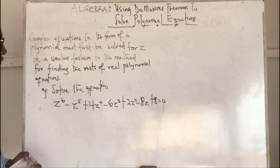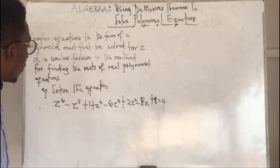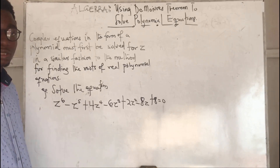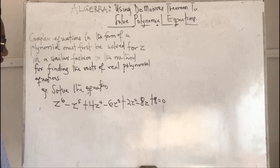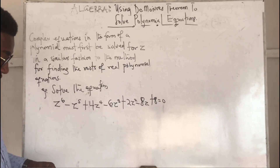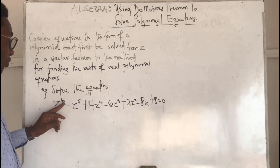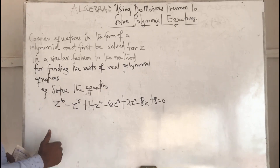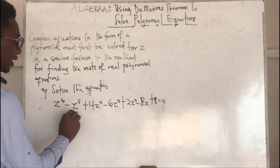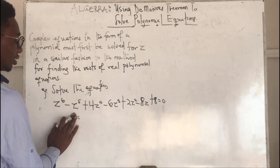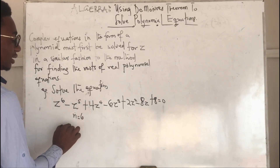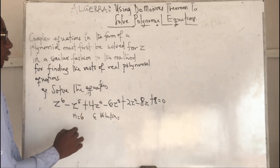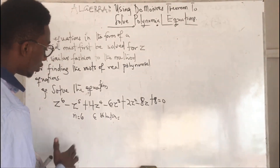This is the equation, and the highest degree is 6. They are all complex numbers with imaginary and real parts. At the end we have to find 6 solutions, because the highest degree — n — here is 6. So we need 6 solutions.